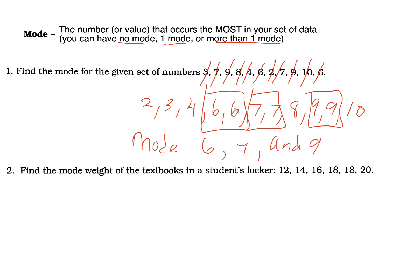Remember that definition: you can have no mode, one mode, or more than one. Here I have to find the mode weight of the textbook in a student's locker. Sometimes on the TAKS test they write the numbers in order for you since the test is timed. The data goes 12, 14, 16, 18, 18, 20 — ordered from smallest to largest. The number that appears the most is 18, so our mode is 18.